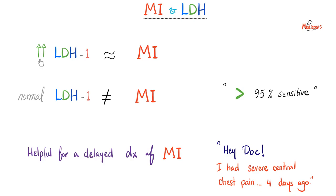Myocardial infarction and LDH: if a patient has elevated LDH1, which comes from the heart, it is very possible this is MI. But remember, this could also be hemolysis. LDH1 is specific, but most importantly it's very sensitive — a normal LDH1 almost excludes the diagnosis of MI; it is more than 95% sensitive. LDH also returns back to normal after about 5 to 10 days, helping diagnose delayed cases of MI.